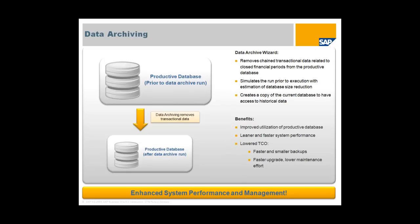A highly requested feature is the data archiving capability. You can take a productive database, run the data archiving wizard, and remove transactional data from closed periods to shrink down the productive database. The process lets you simulate it prior to execution to estimate the database size reduction. Importantly, a copy of the current database is created so you always have access to historical data. The result: improved utilization of your productive database, a leaner and faster system, and a lower total cost of ownership through faster and smaller backups and faster upgrades.